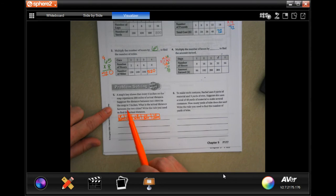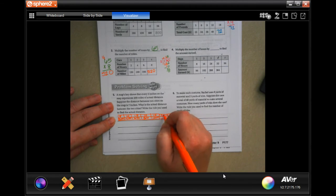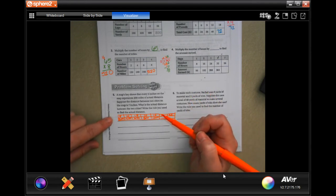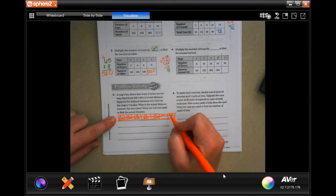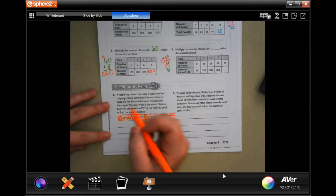Suppose the distance between two cities on the map is seven inches. Well, I did five, so let's just extend it two more: 20, 25. So to get from five to 200, we're multiplying it by 40. We're going to take that seven and multiply it by 40.